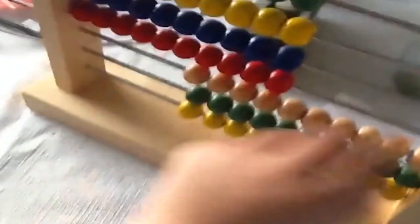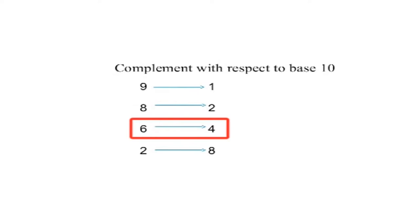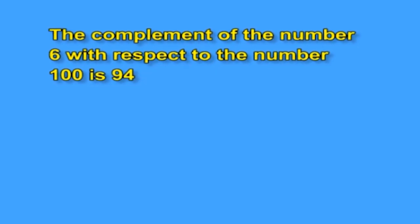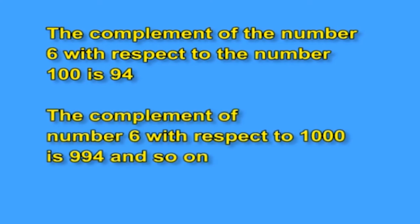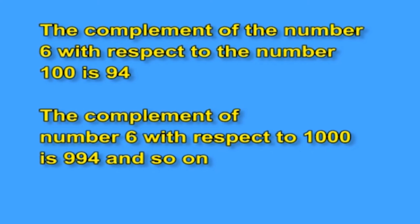Example for complement of a number: take the number 6. The complement of this number with respect to 10 is 4. Complement is the value which completes, that is the remaining value with respect to the number which completes. The complement of 6 with respect to 100 is 94. The complement of 6 with respect to 1000 is 994, and so on.